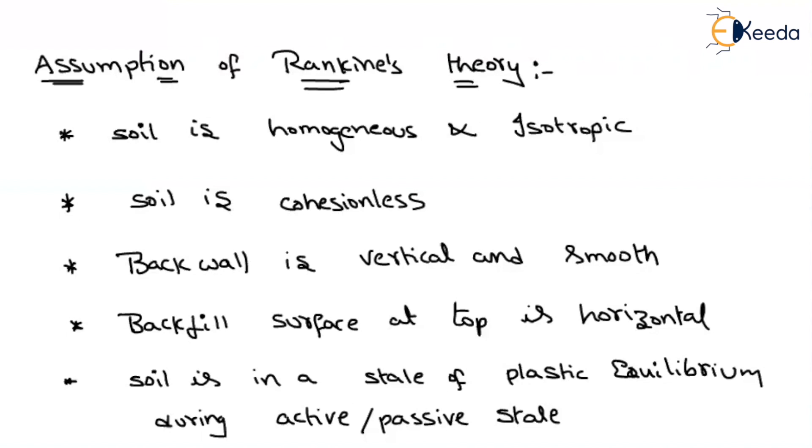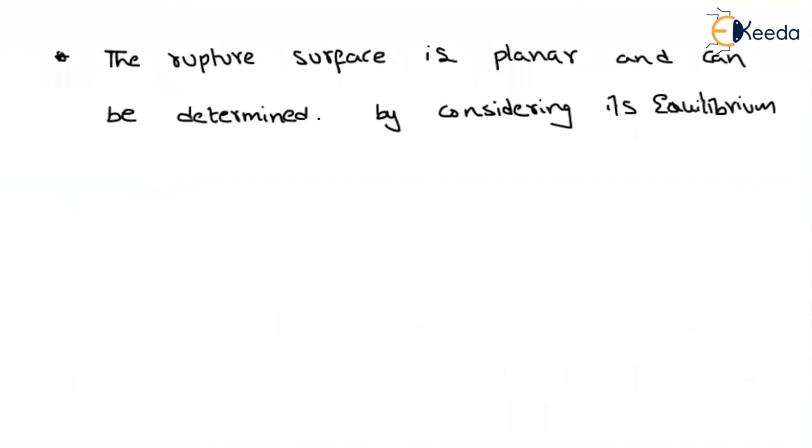And also he has considered that either in active state or in passive state, he is saying that your soil mass is in plastic equilibrium. And main important point is that the rupture surface or we can call it as a failure surface. He is saying that the failure surface is planar. That means it will be like some inclined weight. And can be determined by considering it is in equilibrium. That means at the time of failure, he will consider the equilibrium properties and then he will find out the forces acting. This is about Rankine's theory and its assumptions.